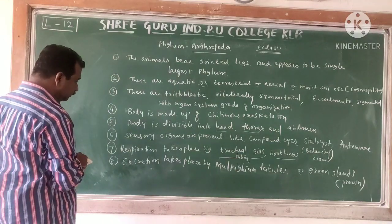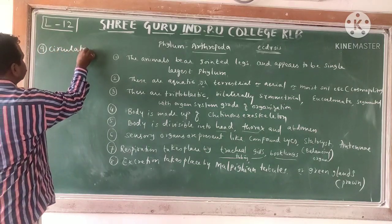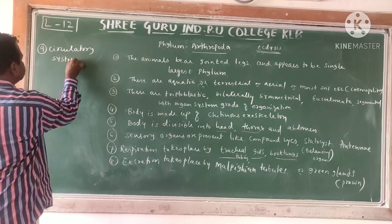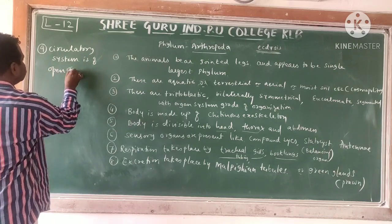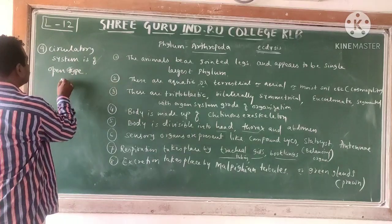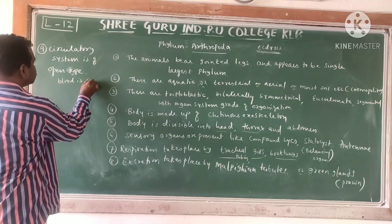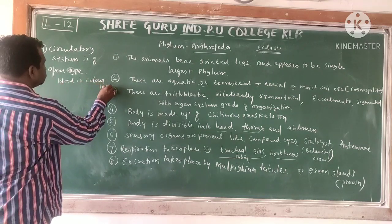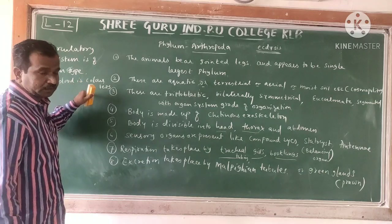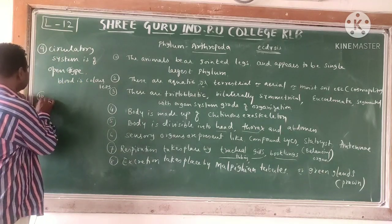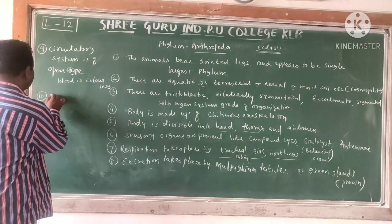Ninth character: the circulatory system is of open type. Blood is colorless. Additionally, a ventral nerve cord is also going to be found, as we discussed earlier.